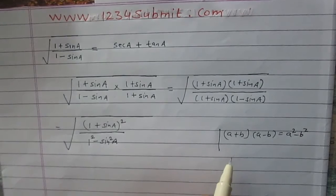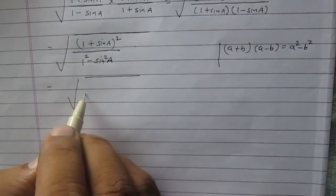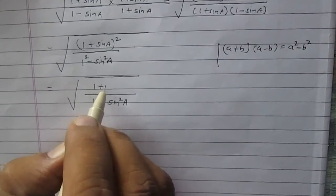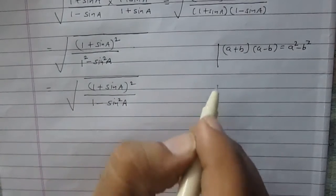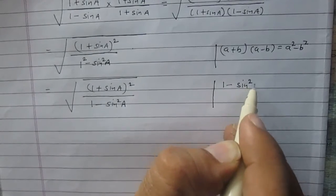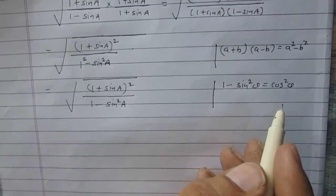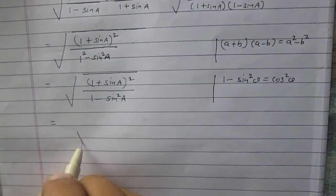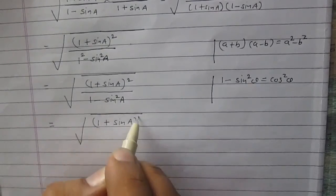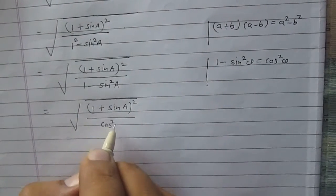Now 1 squared minus sin squared a can be written as 1 minus sin squared a, while the numerator remains as it is. We know the trigonometric identity: 1 minus sin squared theta equals cos squared theta. Using this identity, 1 minus sin squared a is nothing but cos squared a.